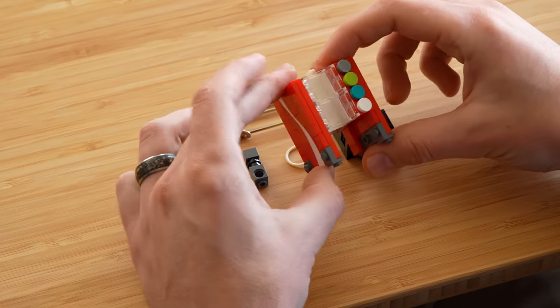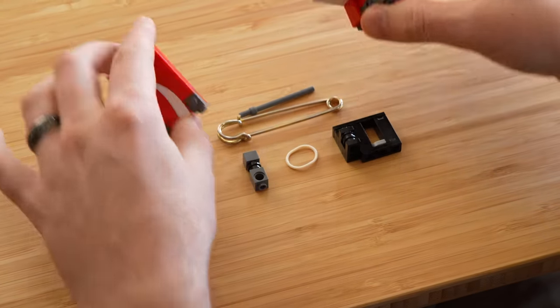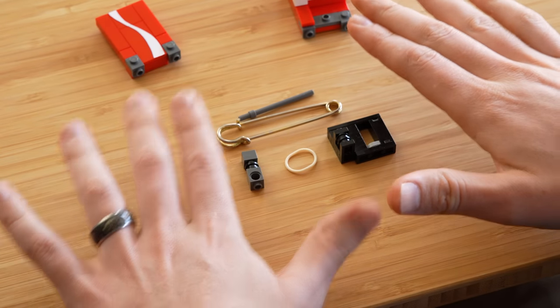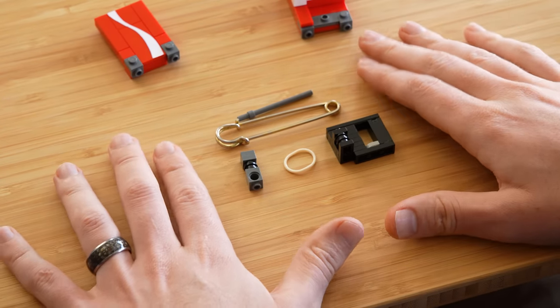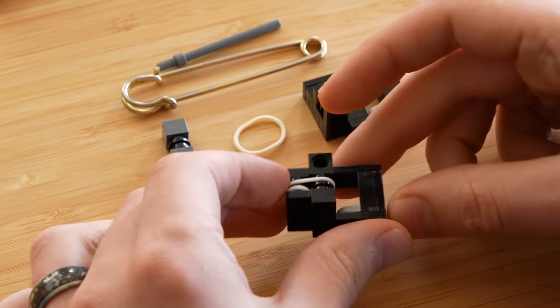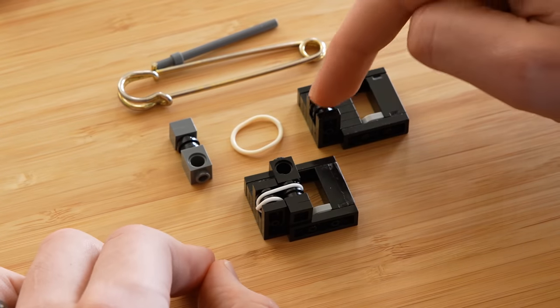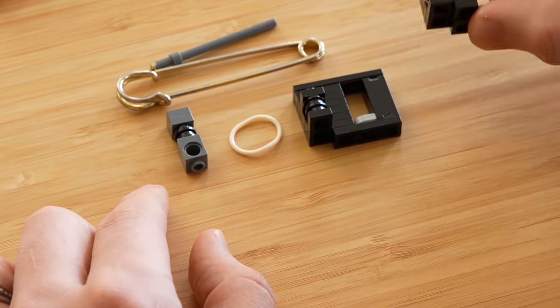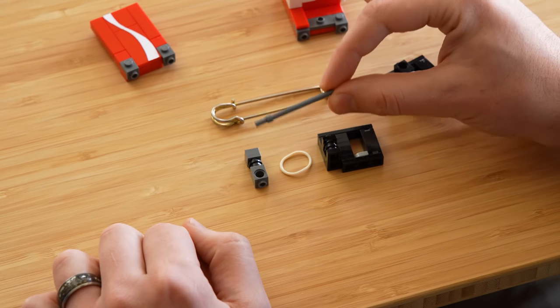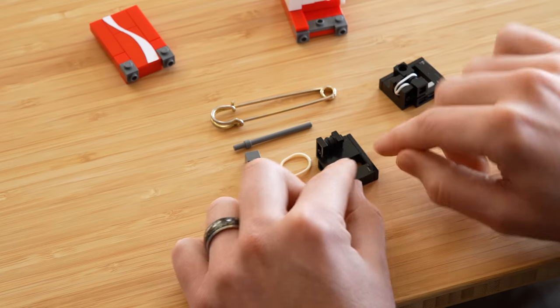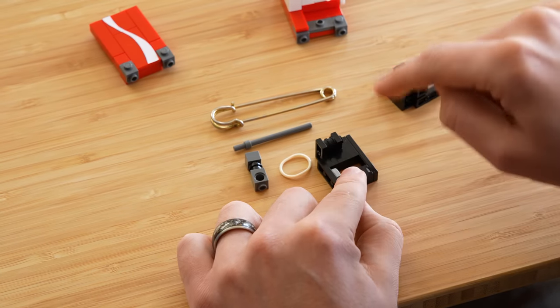So at this point, you should have these two pieces. You can tell that they go together, but we're not doing that yet. And you should have all of this. Photo instructions do not work well for what I'm about to do. So it just has to be a video. Here's what we're trying to make. Basically, all we have left to do is wrap this rubber band around these two components.